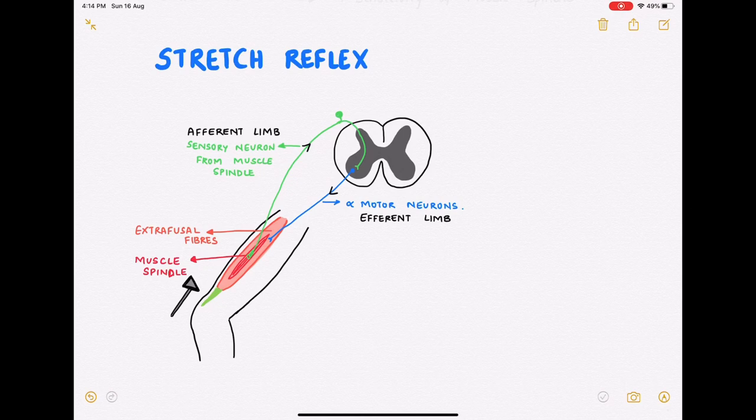This stimulates the sensory neurons which in the spinal cord terminates on the alpha motor neurons for the same muscle. Thus there is contraction of the extrafusal fibers of the same muscle, that is in this example the quadriceps muscle. I think it is needless to say that this reflex is important in order to prevent muscle damage due to sudden stretch.